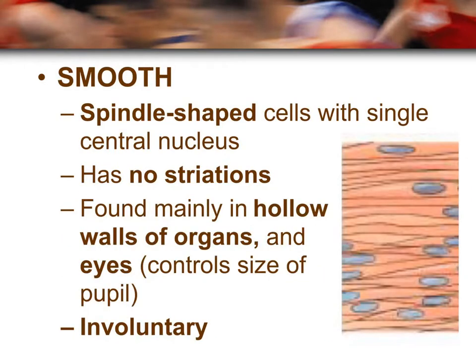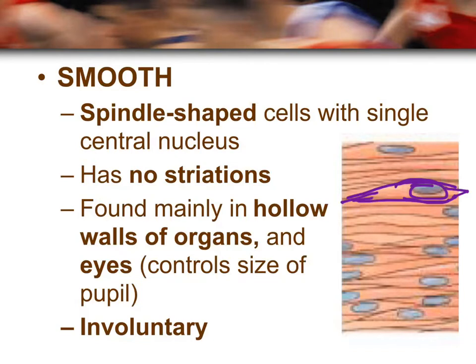Lastly, there is smooth muscle, which gets its name from the fact that the muscle tissue almost looks like waves. The smooth muscle cells are spindle shaped, meaning they are thicker toward the middle and taper off toward the sides. They have a single centrally located nucleus, just like cardiac muscle. Unlike cardiac and skeletal muscle, smooth muscle does not have striations.